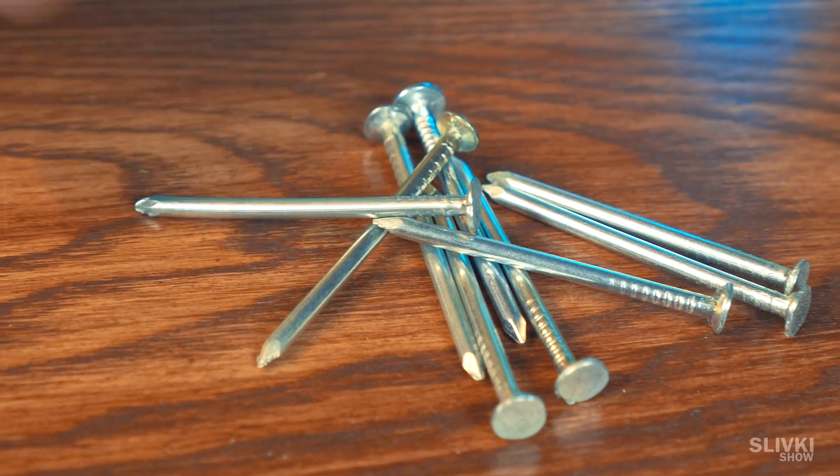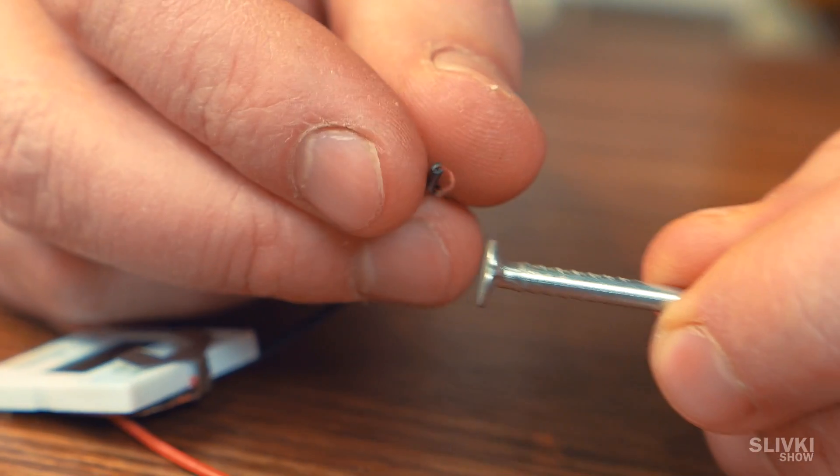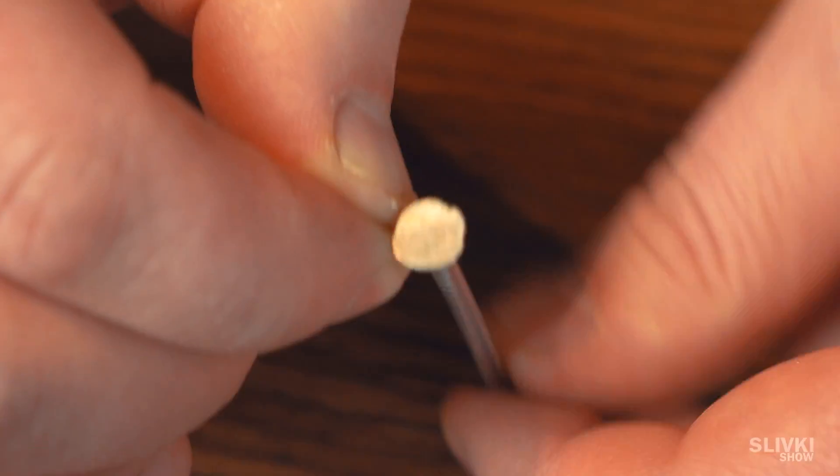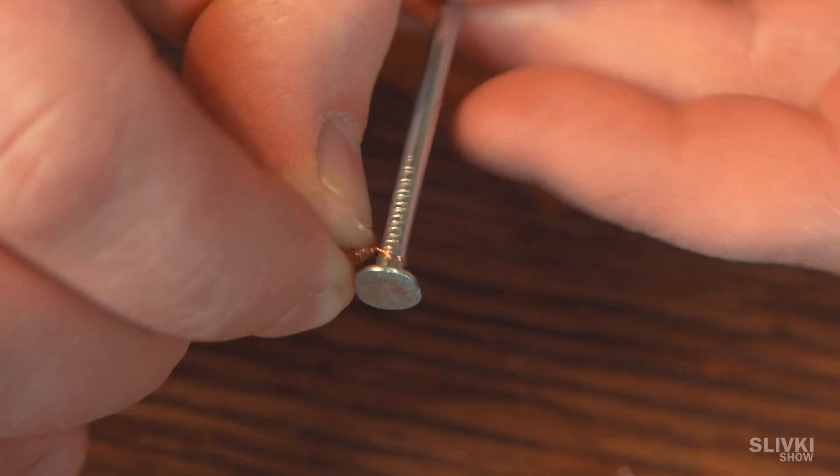Now we need zinc, which we found in a hardware store with special nails whose surface is covered with that metal. Tighten this to the minus wire.